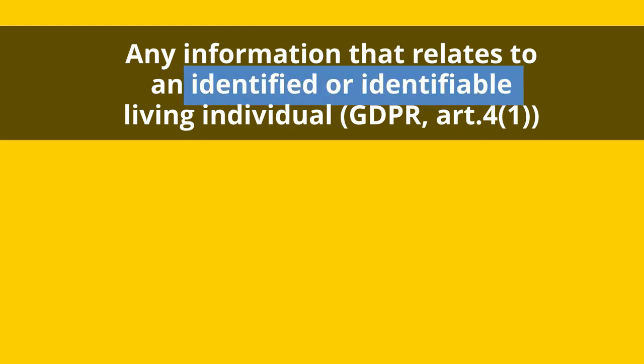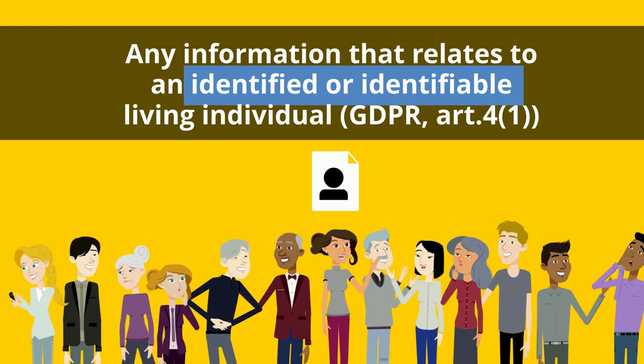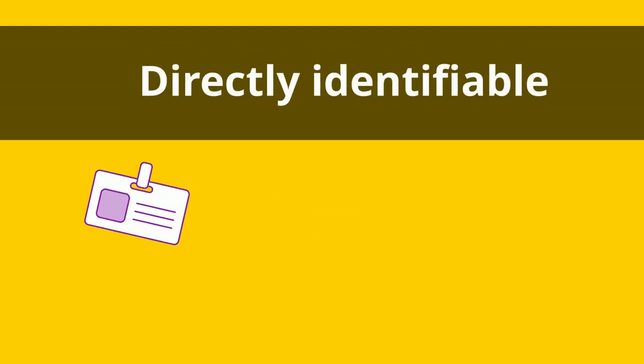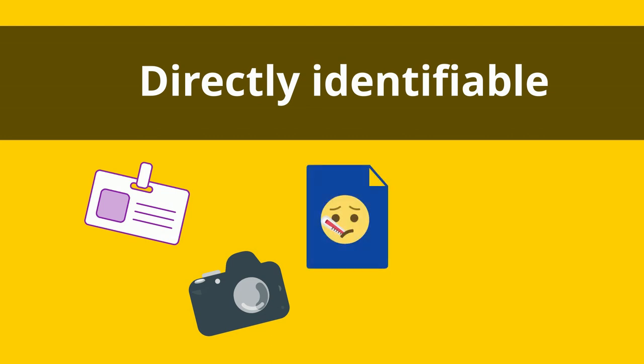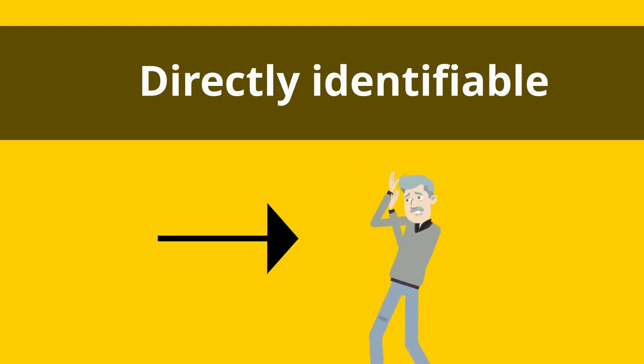Finally, 'identified or identifiable' means that the data can be used to identify someone, be it directly or indirectly. Data can be directly identifiable through information like your full name, your picture, patient number, email address, or location data, to name a few. These types of information lead directly to a specific person.